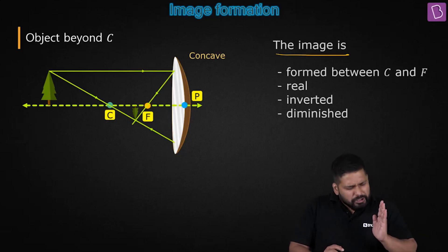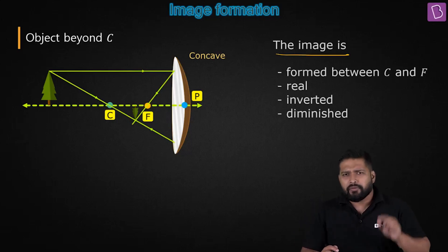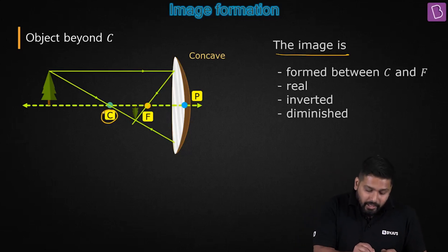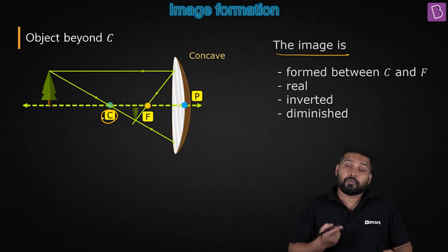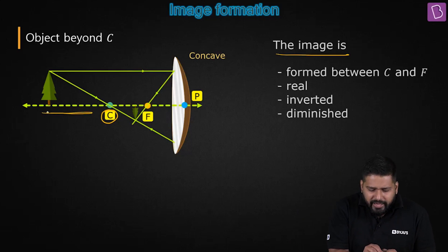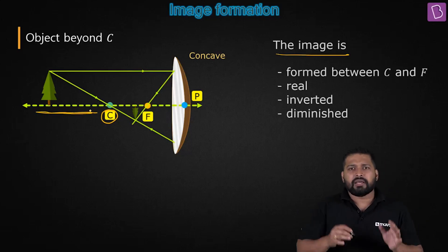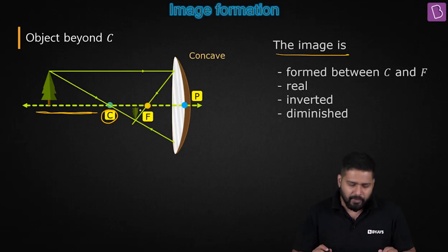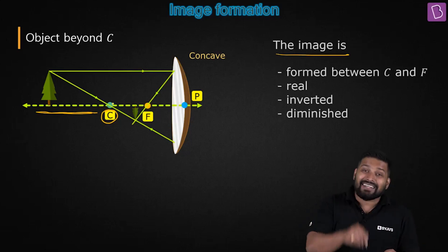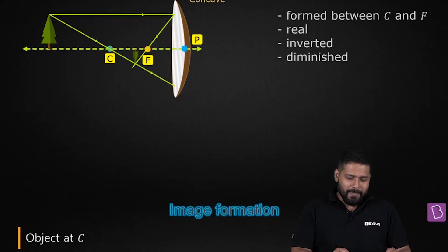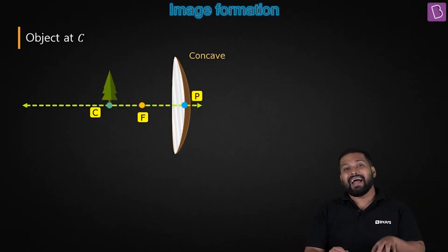Now let's push this object a little bit further. The next known point for us is C. What will happen if I put the object at C? If you put the object anywhere beyond C, the image is always going to be formed between C and F. So now if I put the object at C, what is going to happen? This is going to be a special point.